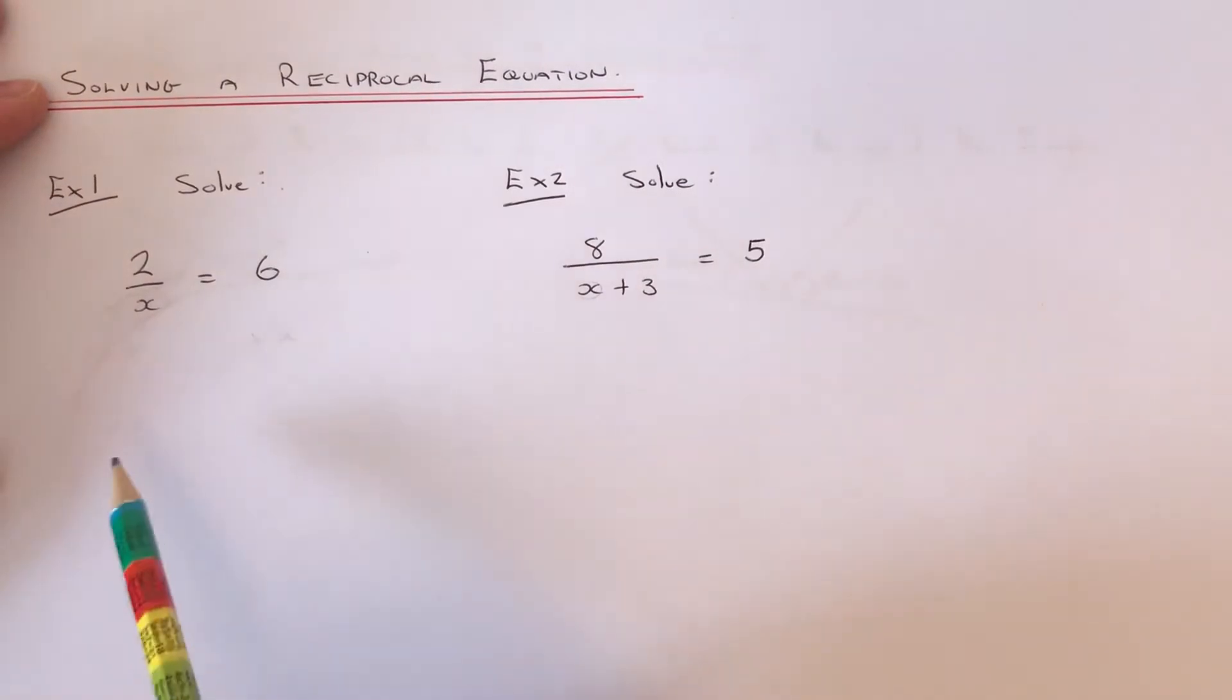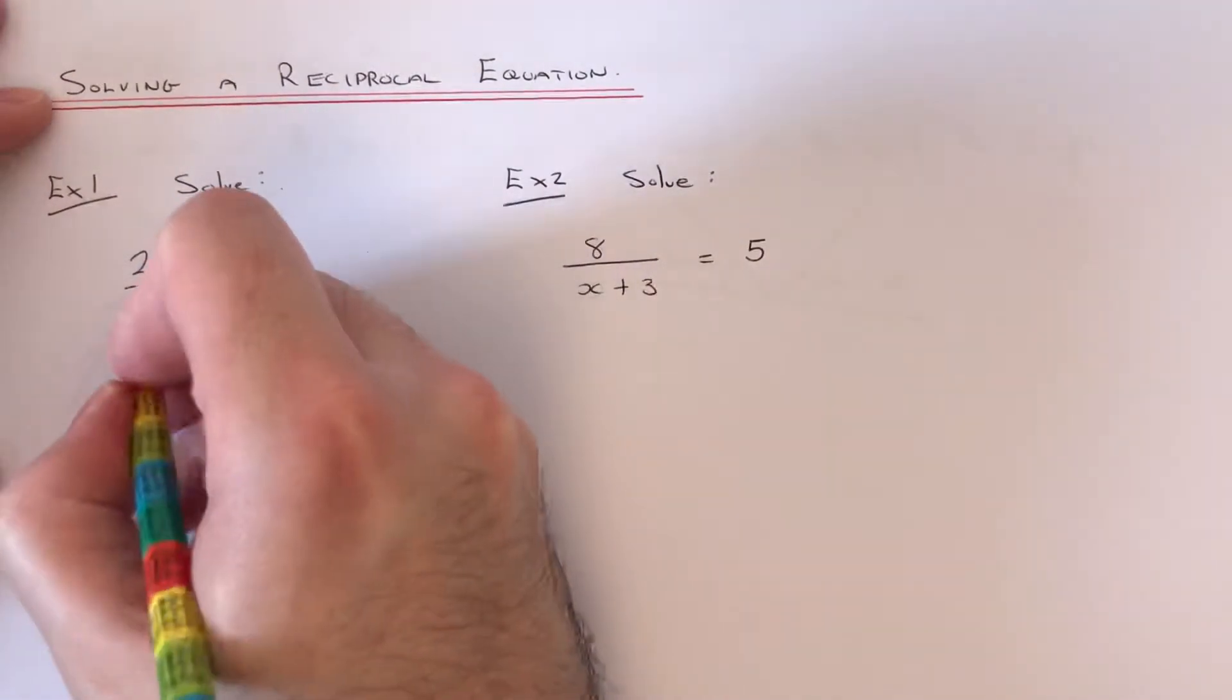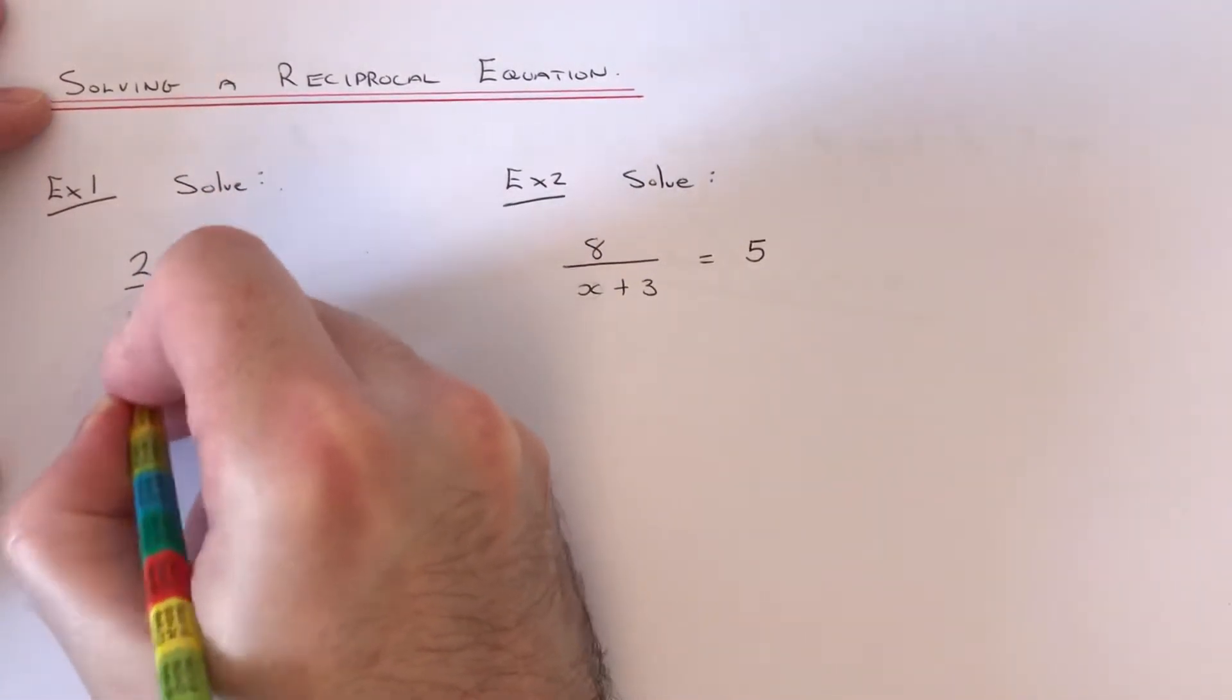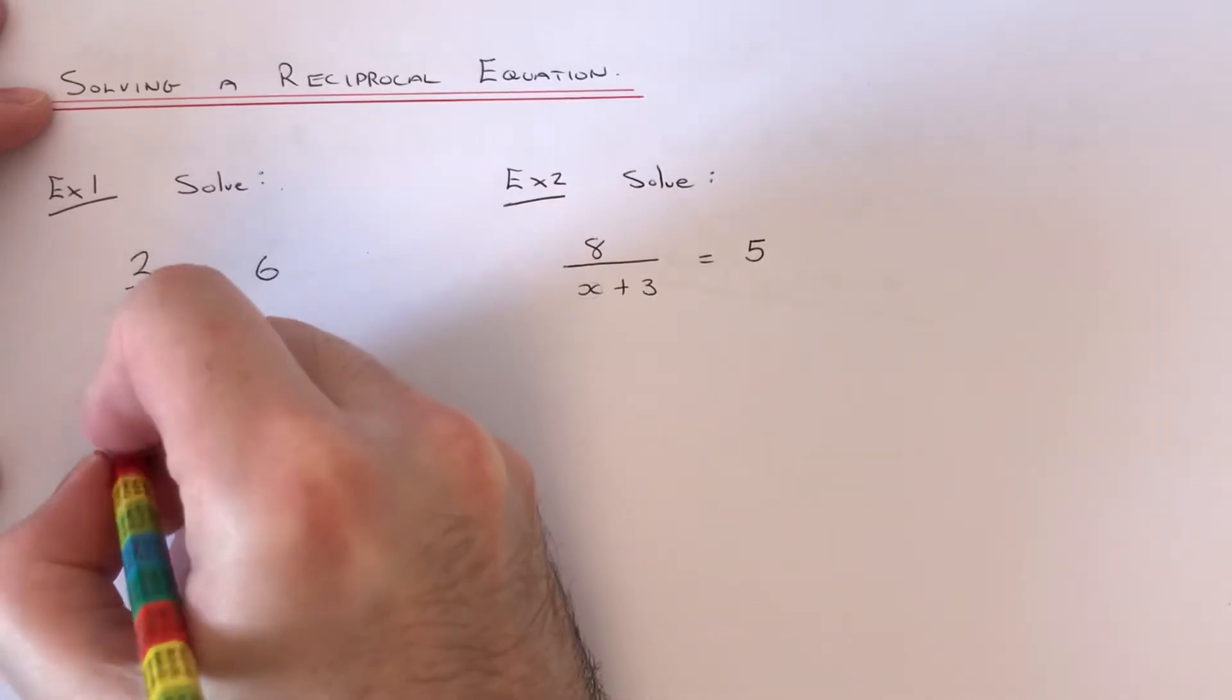So let's have a look at example 1 then. We've got to solve 2 over x equals 6. Now the best way to do this is to multiply by the denominator of our fraction here, which is x.